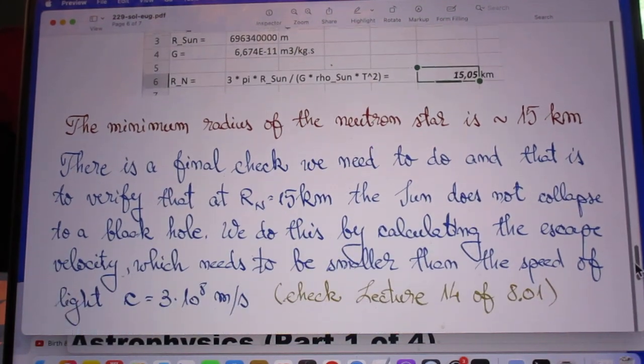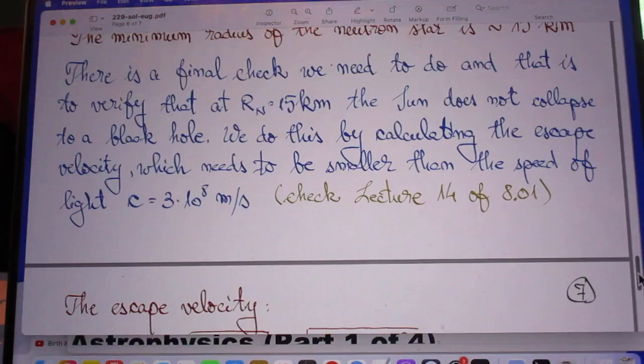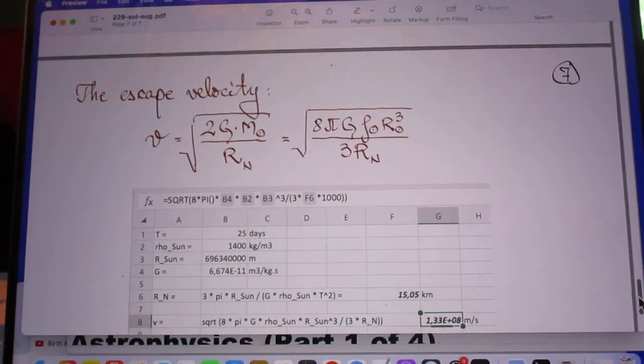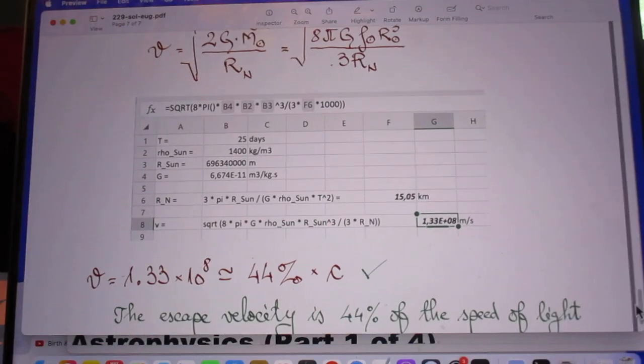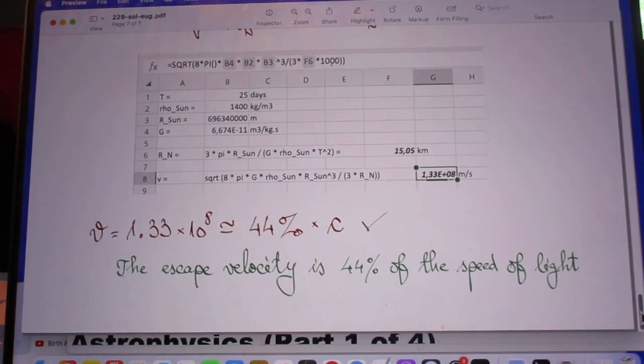He wants to do a final check to see what the speed is at the equator to make sure that it is not larger than the speed of light. And he calculates that here and he concludes that indeed the speed at the equator is not larger than the speed of light. It's about 44% of the speed of light.